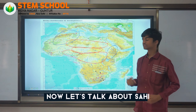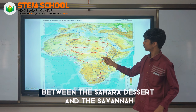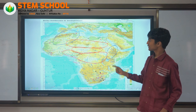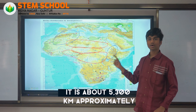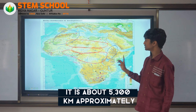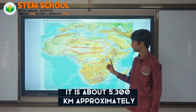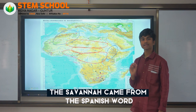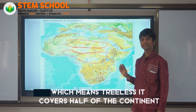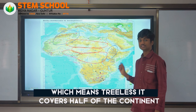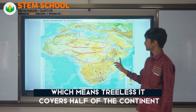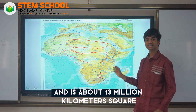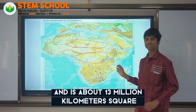Now let us talk about the Sahel. The Sahel is sandwiched between the Sahara Desert and the Savannah, and it is about 5,300 km approximately. Now let us talk about the Savannah. The Savannah came from the Spanish word meaning treeless. It covers half of the continent and is about 30 million km square.